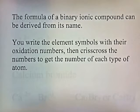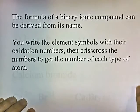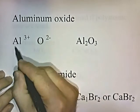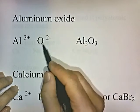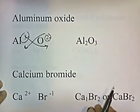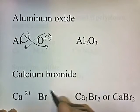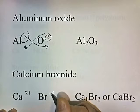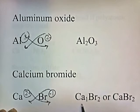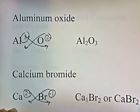The formula of a binary ionic compound can be derived from its name. Write the element symbols with oxidation numbers and crisscross the numbers to get the count of each atom. For example: aluminum oxide — Al is group 3 (plus 3), oxide is oxygen group 6 (minus 2) — crisscross gives Al2O3. Calcium bromide — Ca is group 2 (plus 2), bromide is group 7 (minus 1) — crisscross gives CaBr2.